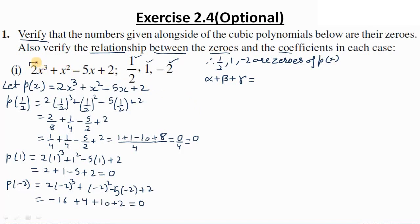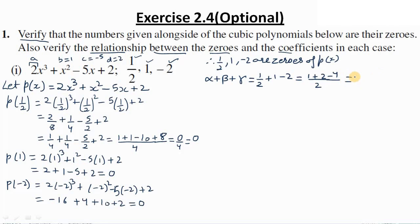The coefficients: a = 2 (coefficient of x³), b = 1 (coefficient of x²), c = -5, d = 2. Alpha + beta + gamma = 1/2 + 1 + (-2). Taking LCM as 2: (1 + 2 - 4)/2 = -1/2. And -b/a = -1/2. Therefore alpha + beta + gamma equals -b upon a.